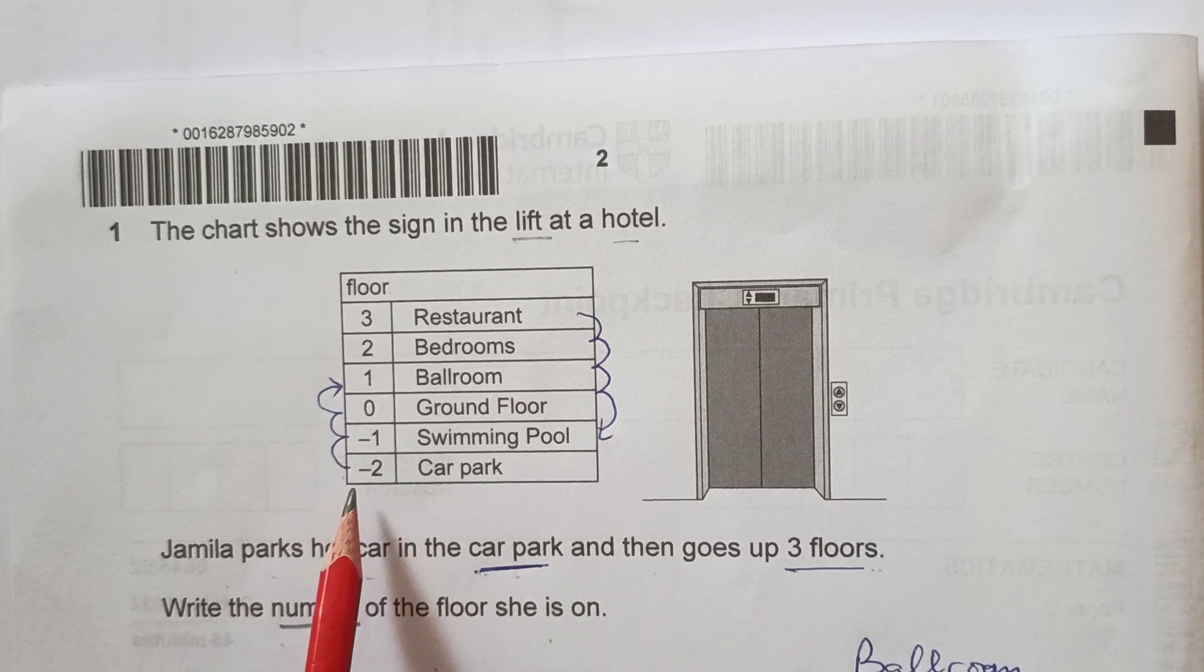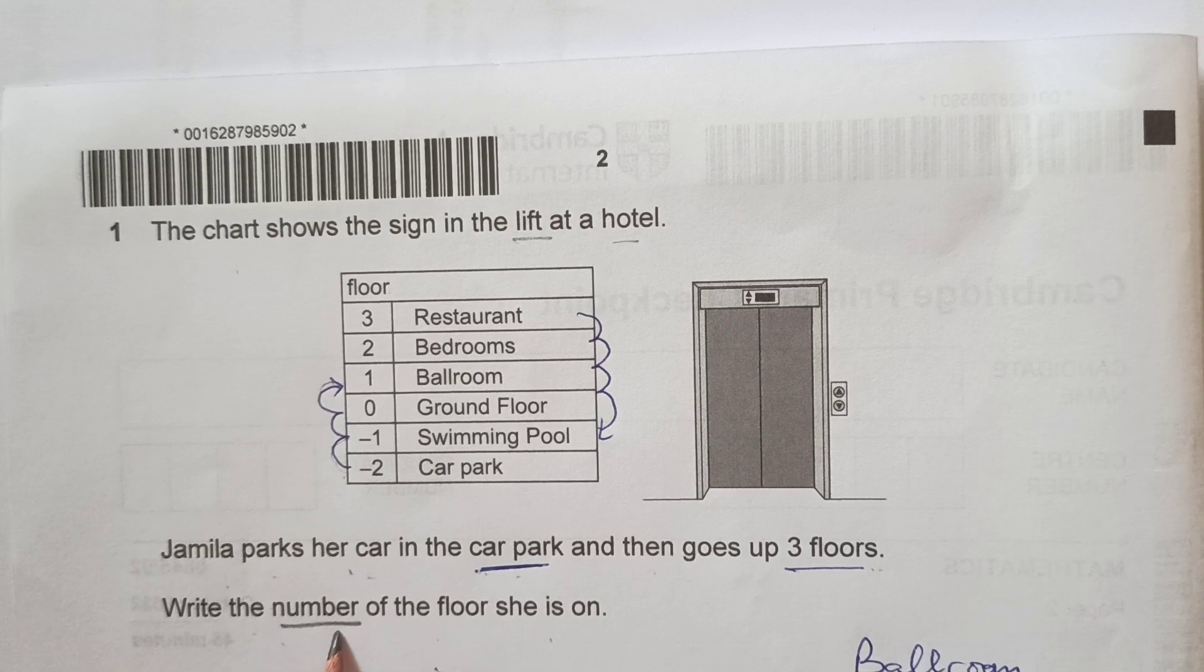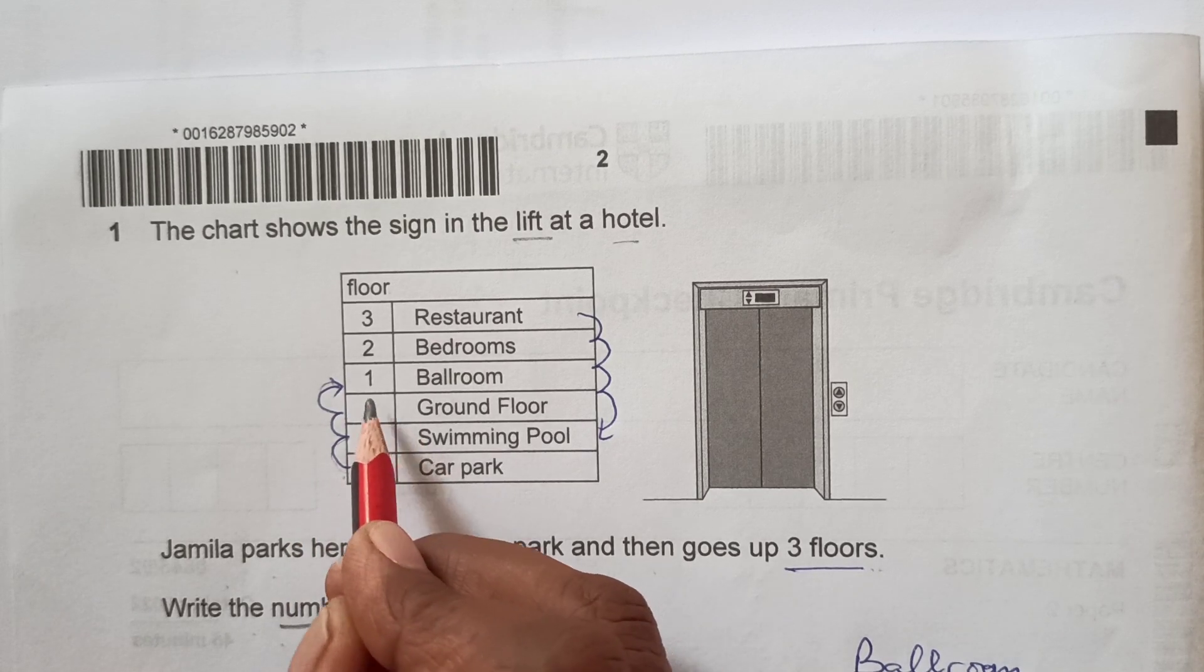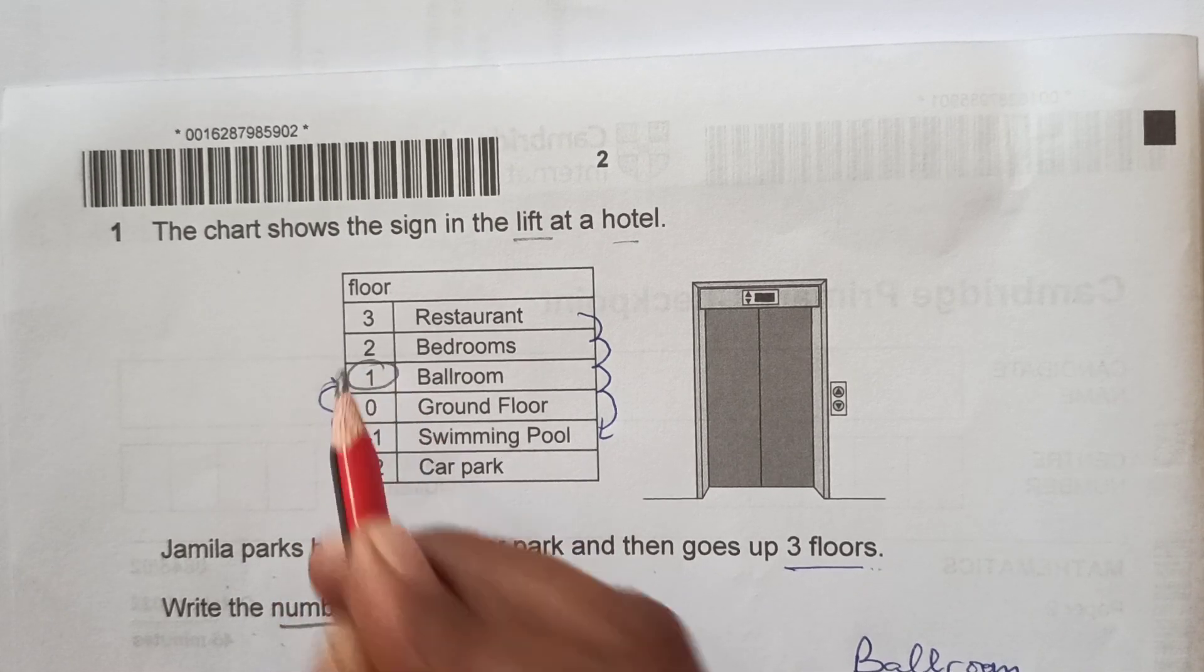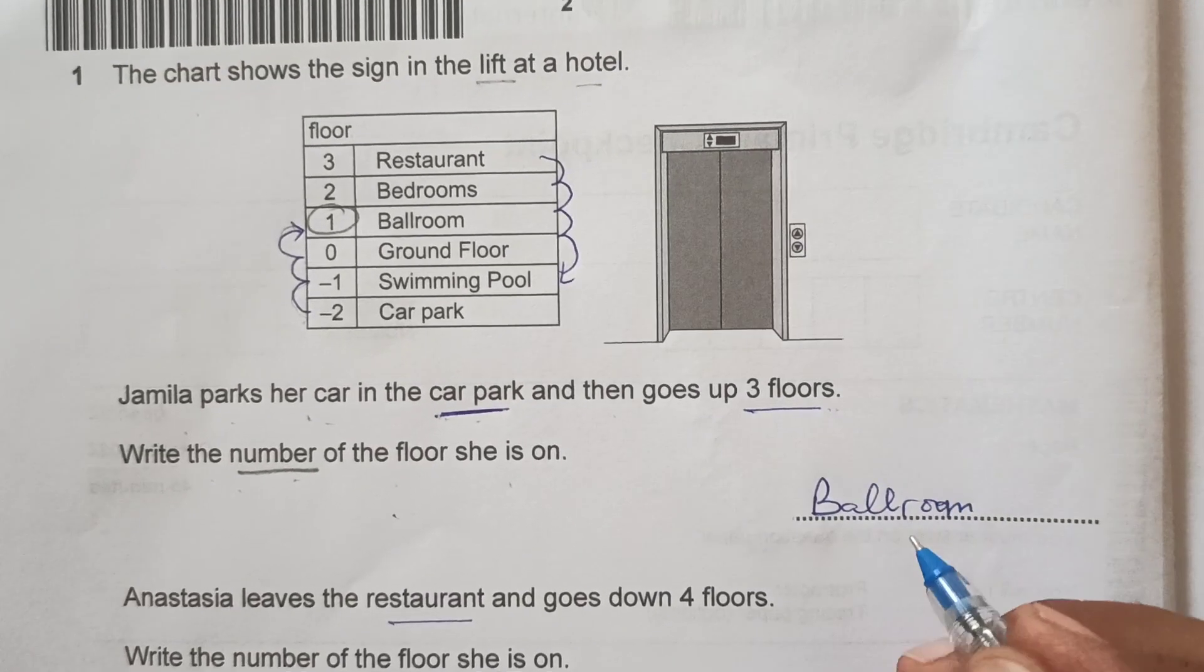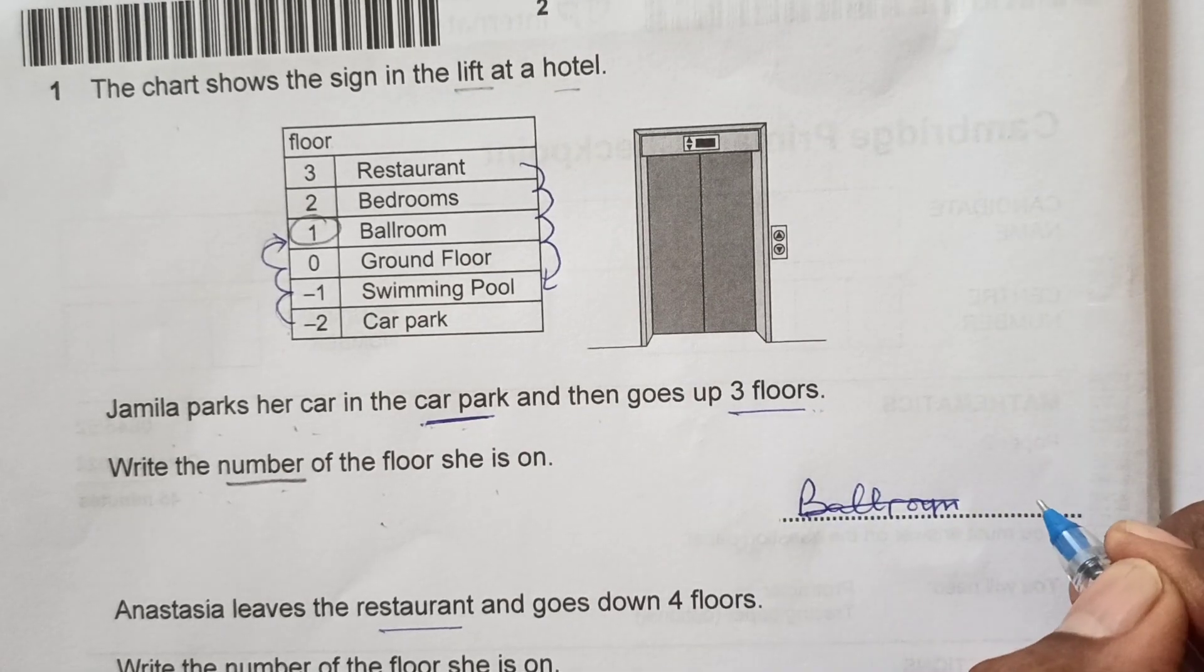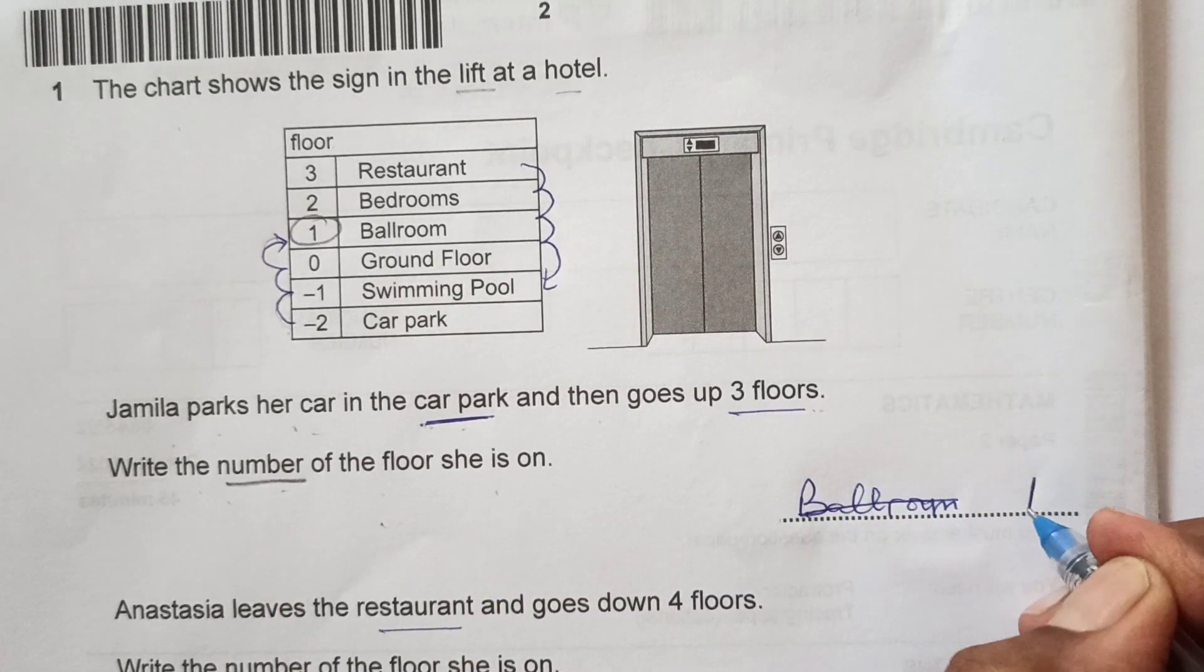Write down the number of the floor she is on. Read the instructions here. Jamila parks her car in car park, here is the car park. Then she goes 3 floors up, 1, 2, 3. Write down the number of the floor she is on. What number is that? That is floor 1, which is ballroom. You need to write the number only, that means 1.